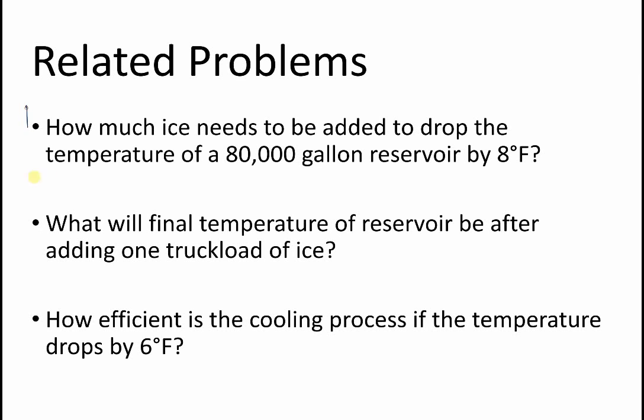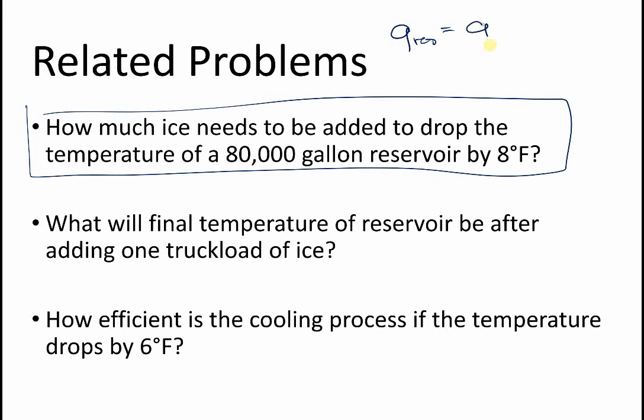So we did a problem using this model of how much ice needs to be added to drop the temperature. We could use that same connection of equations, that same q_reservoir = q_melt + q_warm, we could use that same thing to predict a final temperature after we added a specified weight of ice. That would let us calculate how efficient it was, how much of the heat went into the ice and how much of the ice melting was from the air or something like that. We could do a number of things once we've simplified our system to a mathematical model.